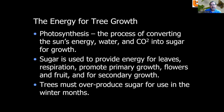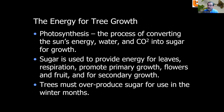The energy for tree growth — photosynthesis, which we learned in school — is the process of converting the sun's energy, combined with water and carbon dioxide, into sugar. These are the three inputs; sugar and oxygen are the outputs. Sugar is used to provide energy for leaves, for respiration to keep living cells alive, for promoting primary growth, for flowering and fruit production — a lot of carbohydrates are in an acorn or an apple — and for secondary growth. Trees must overproduce sugar for use in the winter months when no sugar is being produced.